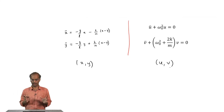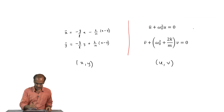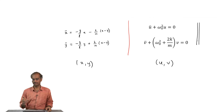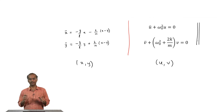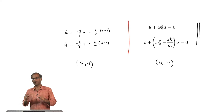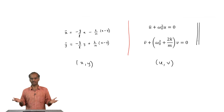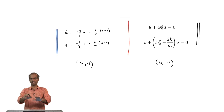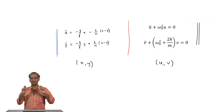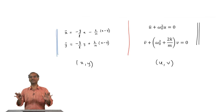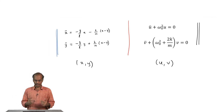The u and v oscillators do not interact with one another — each one is like an independent one-dimensional harmonic oscillator with different frequencies. Whatever energy you initially put into the u and v modes will remain in those modes forever. Let us write down all these consequences.